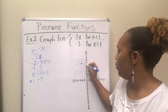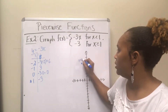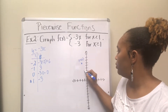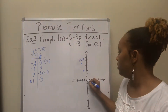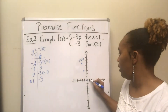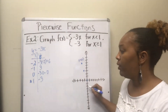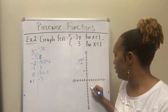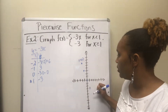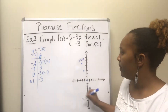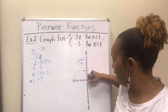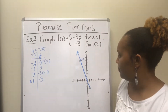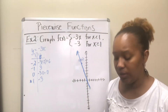Plotting those points on the graph: (-2, 6), (-1, 3), (0, 0), and (1, -3). Since 1 is not included, I put an open circle at (1, -3). This graph is a line, so I draw a line going through those points in that direction. That's the first piece of the graph.